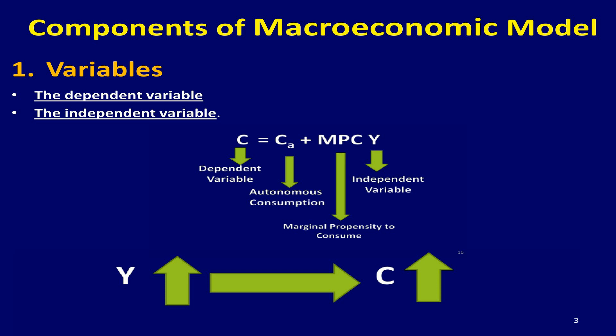For example, personal consumption spending, abbreviated as C, is a dependent variable in the consumption equation. In this equation, personal consumption spending is affected by the change in gross domestic income, abbreviated as Y. The independent variable is the variable that affects another variable.